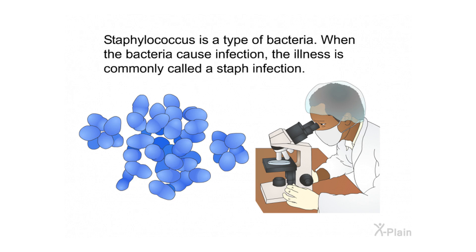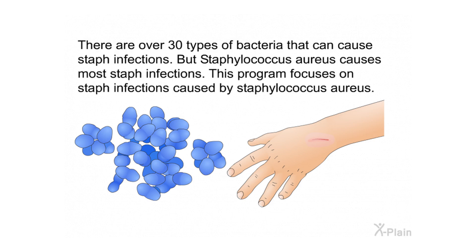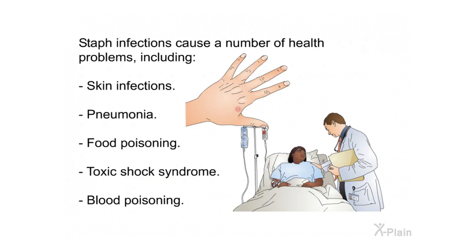Staphylococcus is a type of bacteria; when the bacteria cause infection, the illness is commonly called a staph infection. There are over 30 types of bacteria that can cause staph infections, but Staphylococcus aureus causes most staph infections. Staph infections cause a number of health problems including skin infections, pneumonia, food poisoning, toxic shock syndrome, and blood poisoning.